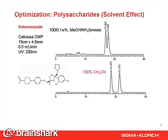Optimization number three is the solvent effect on polysaccharide columns. As you can see, solvent polarity dictates the selectivity on cellulosic phases. There is a dramatic difference between methanol and acetonitrile on the ketoconazole sample.